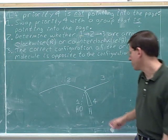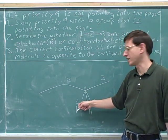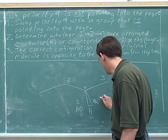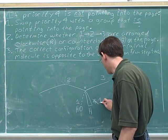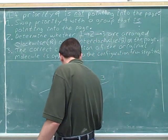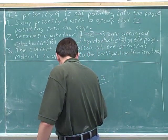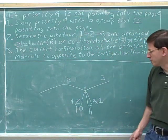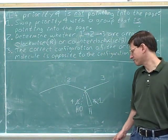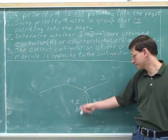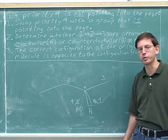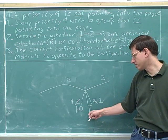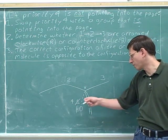In this case, we have no choice — we have to swap with group one because that's the only group pointing into the page. So where the four used to be, we'll put priority one. And where the one used to be, we'll put priority four. No other swap would work here because we have to swap the number four so it's pointing away from us, and only the number one was originally pointing away from us. You don't need to redraw with the hydroxy and hydrogen — you can just swap their numbers.